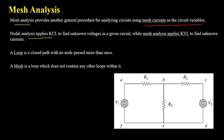A little review from the last chapter: a loop is a closed path with no node passed more than once, which means a loop starts from a node, moves through various nodes without repeating any, and ends on the starting node. A mesh is a closed path or loop which doesn't contain any other loop within it — a mesh is also known as an independent loop.